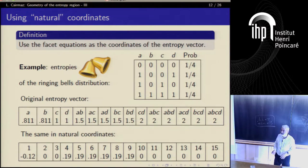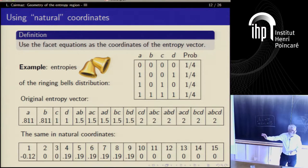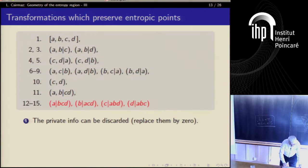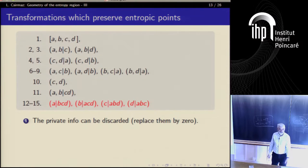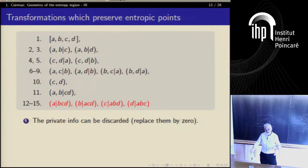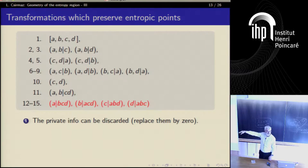I want to make a more handy picture of how this 15-dimensional stuff looks like. All the coordinates you see here — I have a distribution on four variables, and from four variables I'm computing 15 numbers. I'm assuming the very first number is non-positive and all the rest are non-negative numbers.